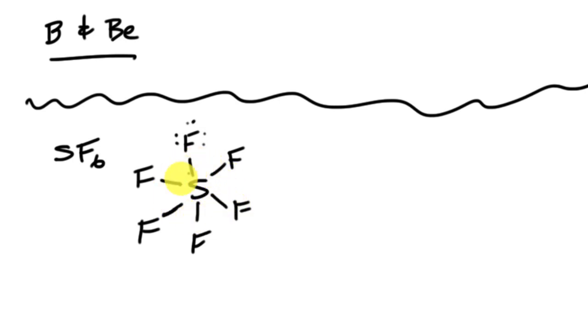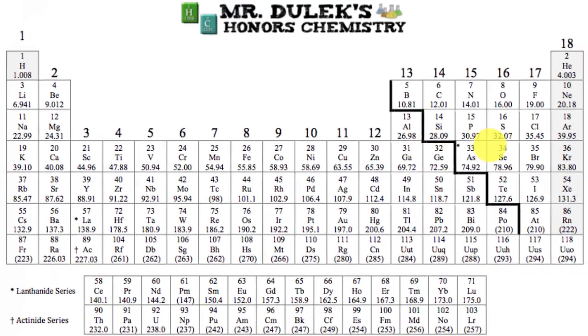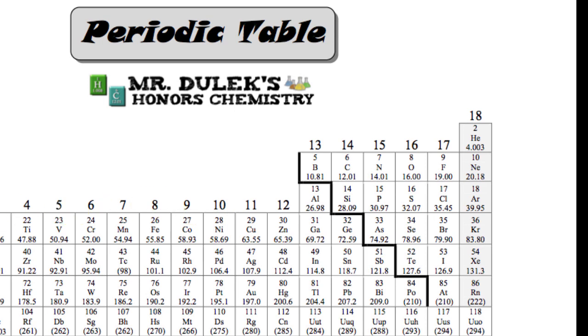Well, if we take a look at sulfur and its position on the periodic table, well, it's right here. It's in the third energy level. This is the first energy level, second energy level, third energy level on the periodic table.